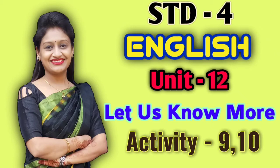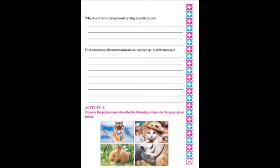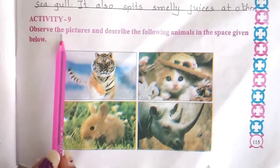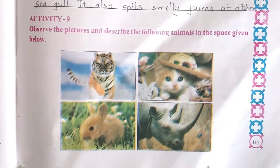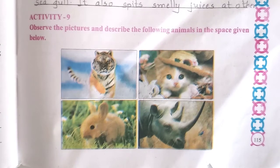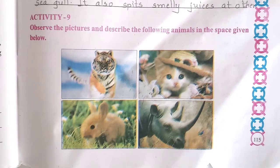Hello everyone. Open your English textbook and open page number 115. Activity 9. Observe the pictures and describe the following animals in the space given below. Here, 4 pictures of 4 animals are given. You have to observe those pictures and write about those animals in the space given on the next page.